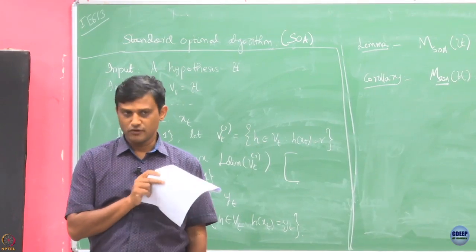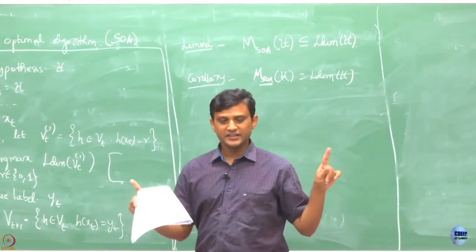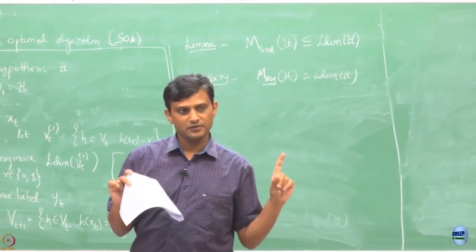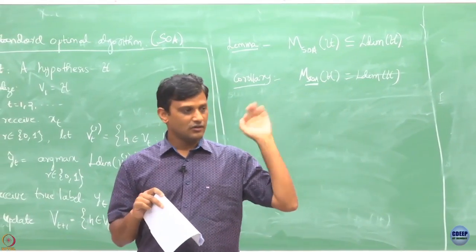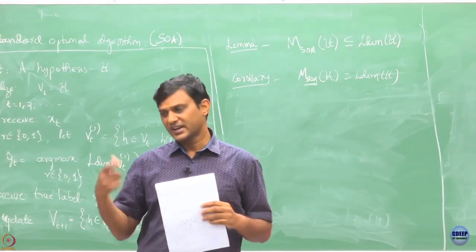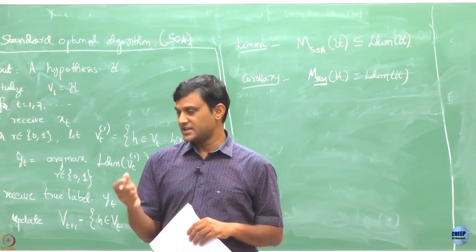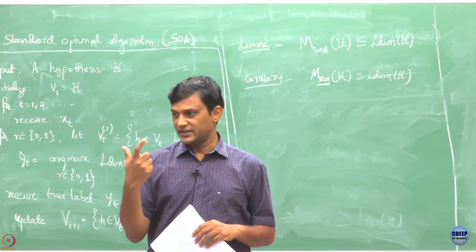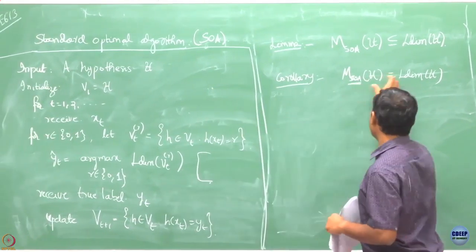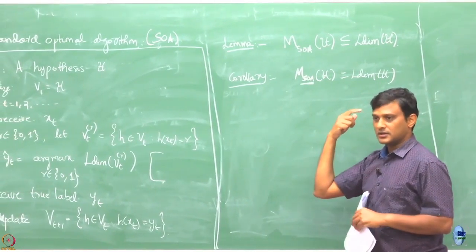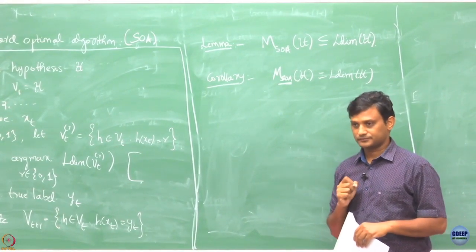The proof is straightforward but I will skip it. Finally, we are completing the loop for the case when the Realizability condition holds. We first showed what kind of bounds we can get under the Realizability assumption, then asked what is the best bound, established the minimum bound through a lower bound, and now showed that lower bound is achievable. So this is the best any algorithm can guarantee when the Realizability assumption holds.